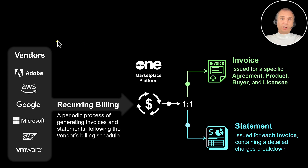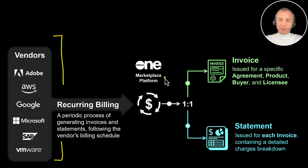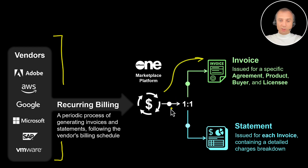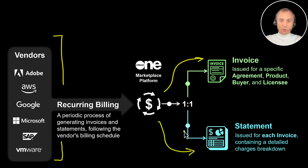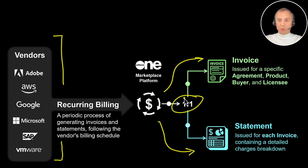If we were to simplify and look at this process at the high level, it's all about us connecting with our vendors that periodically, following their own schedule, issue their billing data to us. And we use that data to generate two distinct types of documents: the invoice document, which is a legal document sent to our clients, and the statement document that we generate for each invoice. Technically speaking, we even generate the statement before we generate the invoice, so the invoice is an aggregation of the data. Those documents correspond one to one and could be used for reconciliation purposes to understand details of their charges.